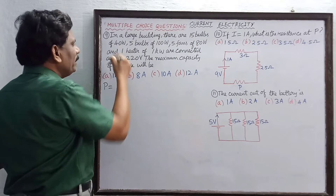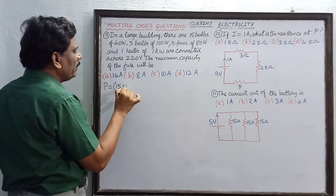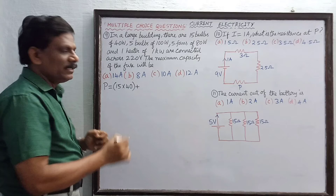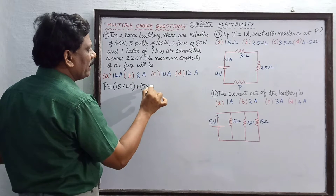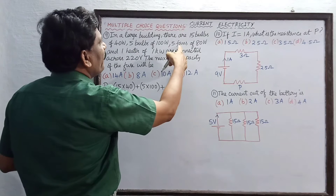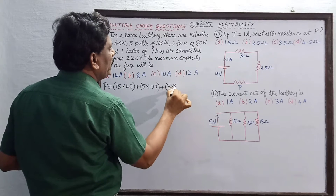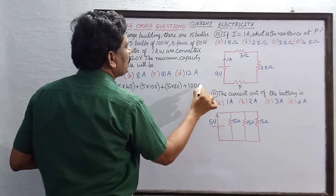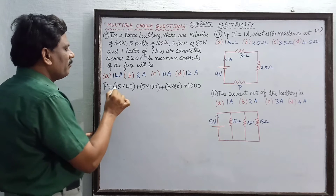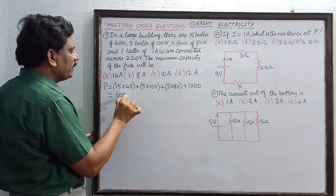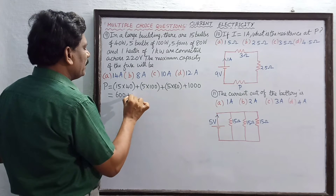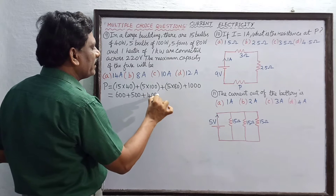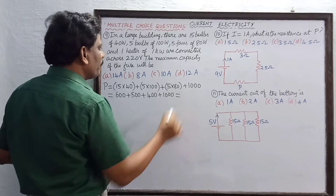15 bulbs each of 40 watts: 15 × 40. Plus 5 bulbs of 100 watts: 5 × 100. Plus 5 fans of 80 watts: 5 × 80. Plus 1 heater of 1000 watts. So this equals 600 plus 500 plus 400 plus 1000.